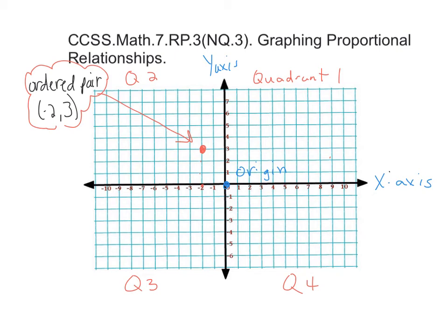Common Core State Standards, Math 7th grade, ratios and proportions 3, numbers and quantity 3, graphing proportional relationships.